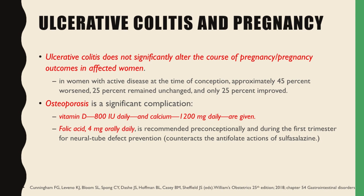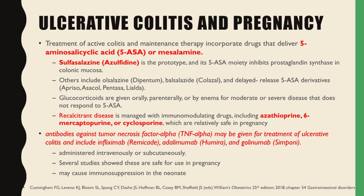Ulcerative colitis does not usually significantly alter the course of pregnancy or pregnancy outcomes. In women with active disease at the time of conception, approximately 45% worsened, 25% remained unchanged, and only 25% improved. Osteoporosis is a significant complication, so vitamin D 800 IU daily and calcium 1,200 mg daily should be given. Folic acid, at least 4 mg orally daily, is recommended preconceptionally and during the first trimester for neural tube defect prevention. The treatment of active colitis and maintenance therapy incorporates drugs that deliver 5-aminosalicylic acid or mesalamine. Sulfasalazine is the prototype, and its 5-ASA moiety inhibits prostaglandin synthase in colonic mucosa.